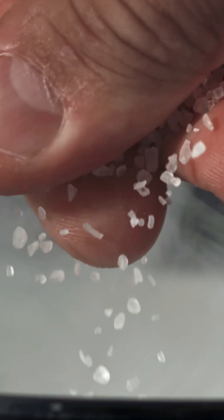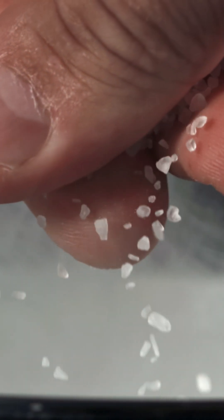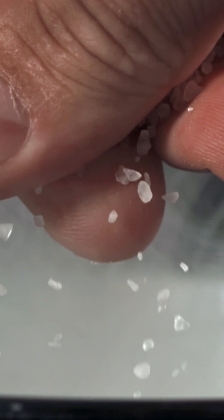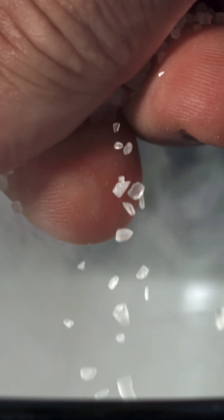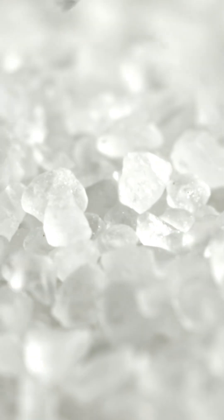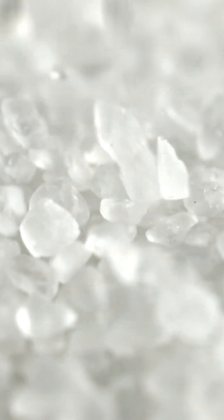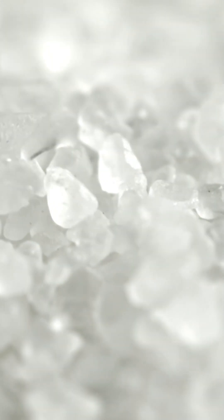For example, when sodium chloride, which is commonly known as table salt, comes into contact with water, a process called dissociation occurs. The chemical elements in table salt are shaped together in a crystal lattice structure held together by ionic bonds.